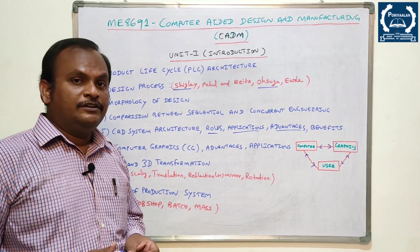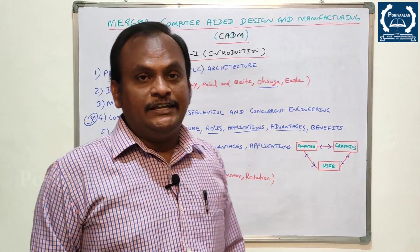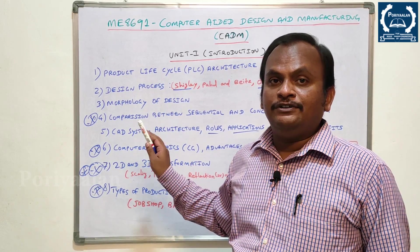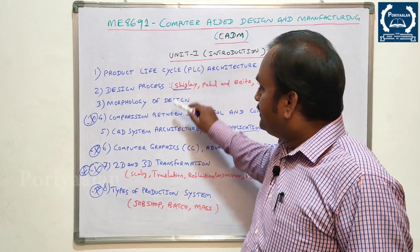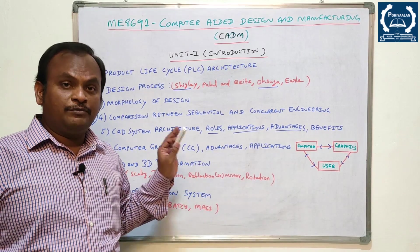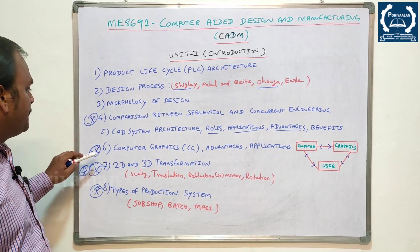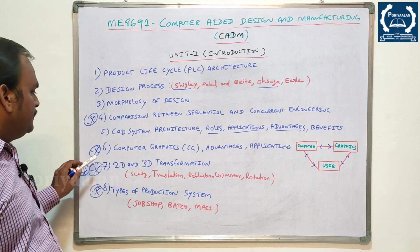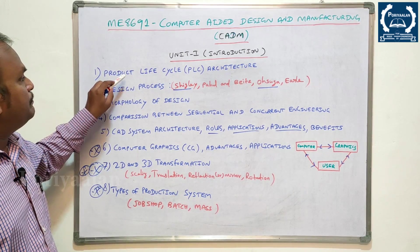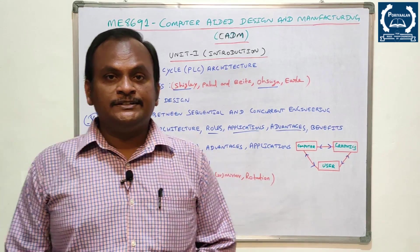Types of production systems: Job Shop, Batch, and Mass Production. Looking at the post-unit overview, all topics in Unit 1 are very important in CAD. You cannot neglect any of them. The key topics in the introduction are: comparison between Sequential and Concurrent, Computer Graphics CG, 2D and 3D Transformation, types of production systems, PLC Architecture, design process — specifically Shigley and Osuga. These are very important for the exam.